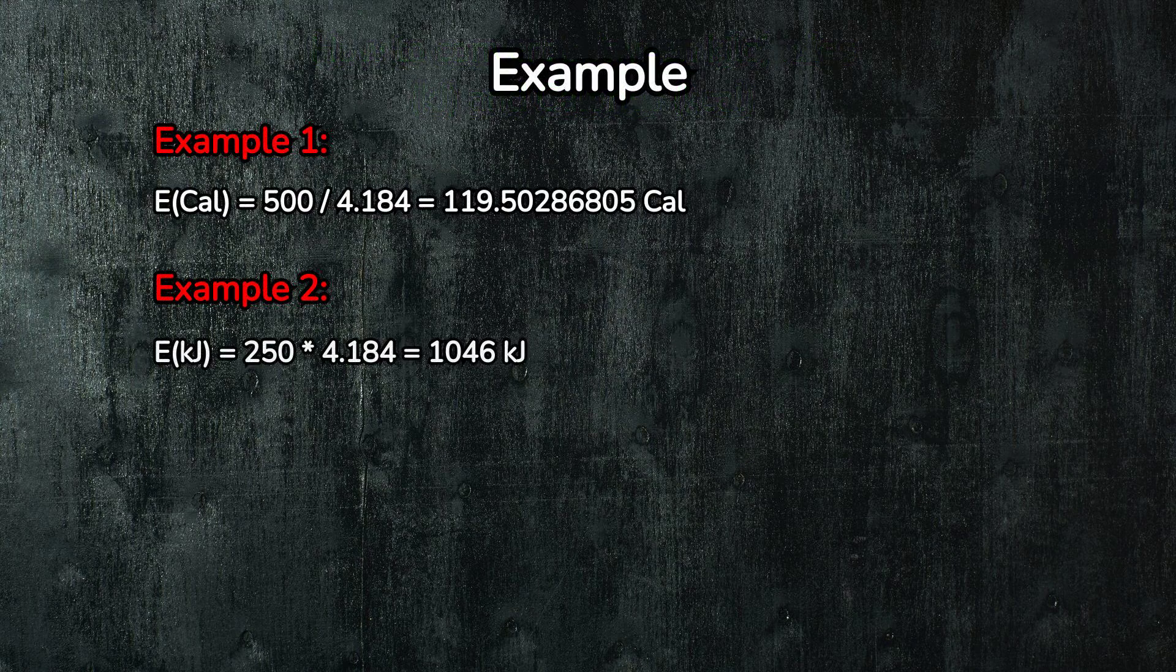Let's do a quick example. Example 1: Suppose you have a snack that says it has 500 kilojoules. How many calories is that? You simply divide the kilojoules by 4.184. So, 500 kilojoules divided by 4.184 equals about 119.5 calories. Easy, right?